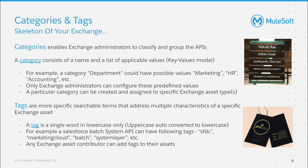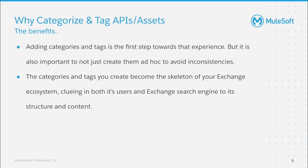As an example, a Salesforce API at the system layer with batch operations on marketing cloud can be tagged with words like SFDC, marketing cloud, batch, and system layer. Tags can be created and applied to APIs by exchange contributors. Taking time to define categories and tags with a more holistic approach boosts your search experience, reduces the time and effort users spend finding the right API, decreases chances of APIs not being discovered, and provides an overall superior navigation experience.